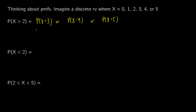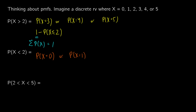We could also think of it as 1 minus the probability that X is less than or equal to 2. The reason we use 1 is that all our probabilities sum to 1, just like with sample spaces. So we can subtract: 1 minus the probability that X is less than or equal to 2. Similarly, if we ask what is the probability that X is less than 2, we're looking for X equals 0 or X equals 1, which we could think of as 1 minus the probability that X is greater than or equal to 3.